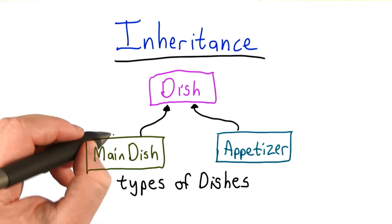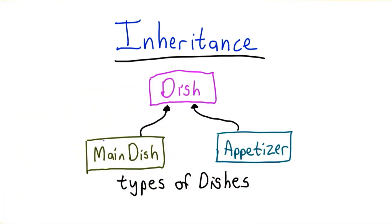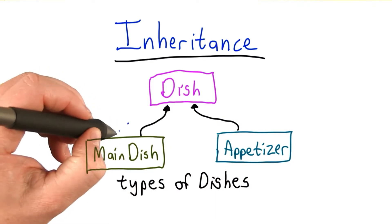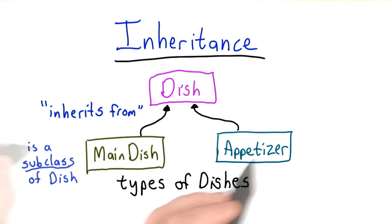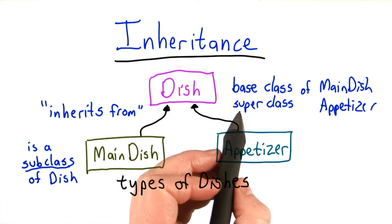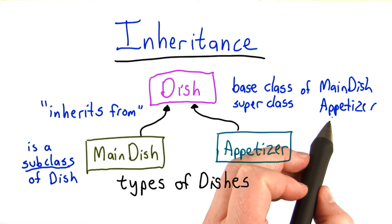We would say main dish inherits from dish. There's lots of terminology that goes along with this. We would say the main dish inherits from dish, and that's what these up arrows in our diagrams mean. If we look at it in the other direction, we would say main dish and appetizer are both subclasses of dish. And we would say dish is the base class or superclass of main dish and appetizer.